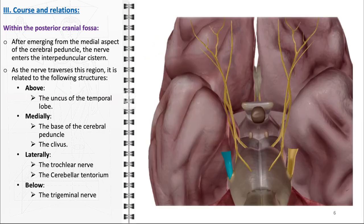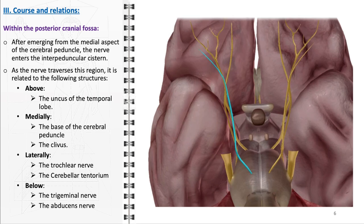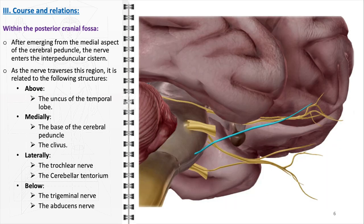Below the oculomotor nerve, there are two other crucial cranial nerves: the trigeminal nerve, which is the main sensory nerve of the face, and the abducens nerve, responsible for lateral eye movement. The anatomical proximity of these nerves underlines the complexity and compactness of the cranial nerve pathways within the posterior cranial fossa.